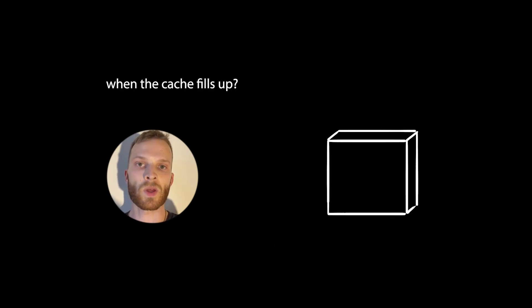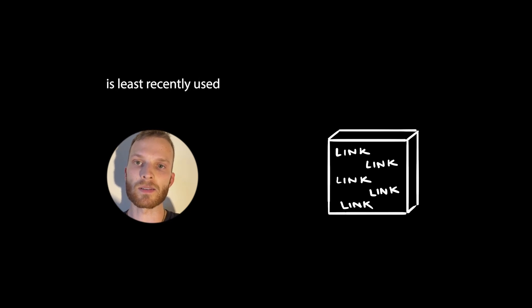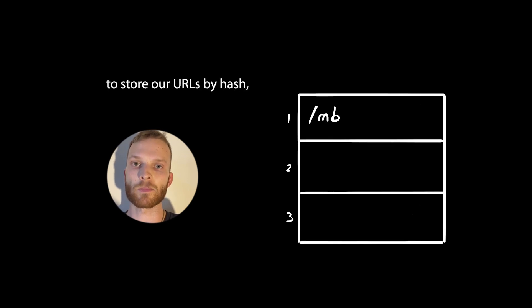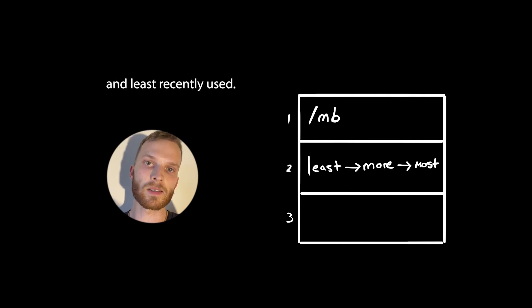So what happens when the cache fills up? A pretty reasonable policy is least recently used, where we use something like a linked hash map to store our URLs by hash, which will keep track of which ones have been most and least recently used.